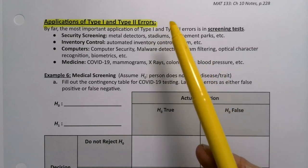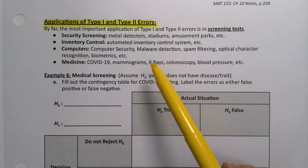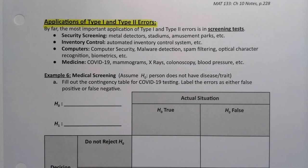Applications of type 1 and type 2 errors are numerous. One of the most important is in screening testing — for example, security tests, metal detectors when you walk into stadiums and amusement parks, inventory control where things on a line get accepted or rejected, computer programs, malware detection, spam filtering, optical character recognition, and biometrics. All of these can have type 1 and type 2 errors.